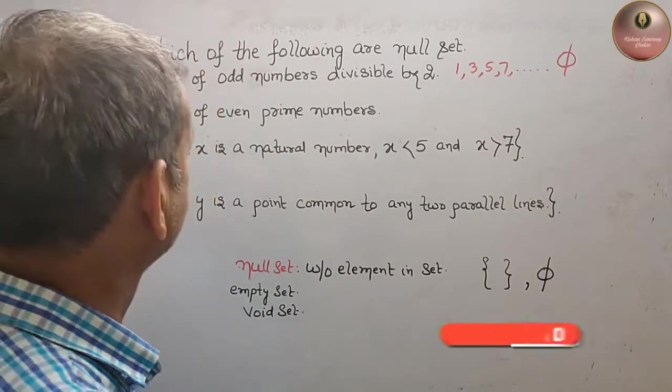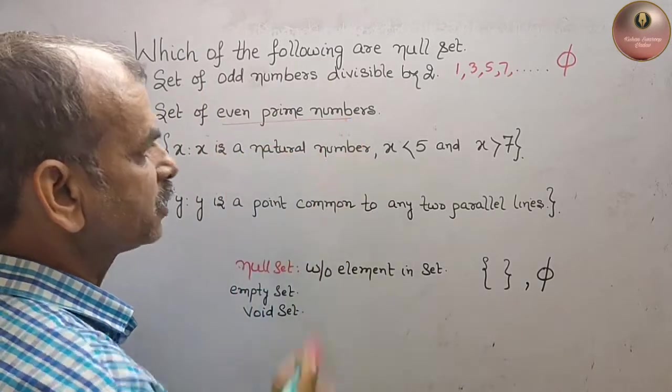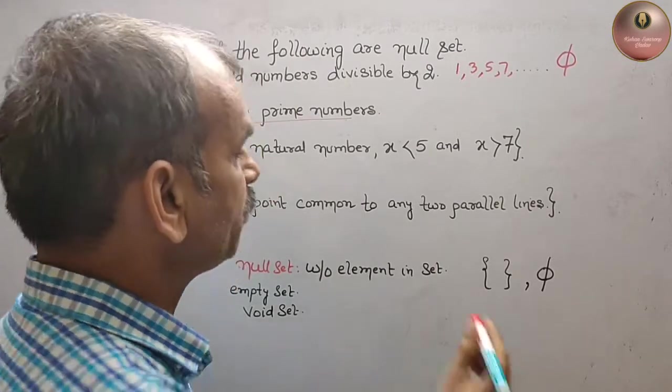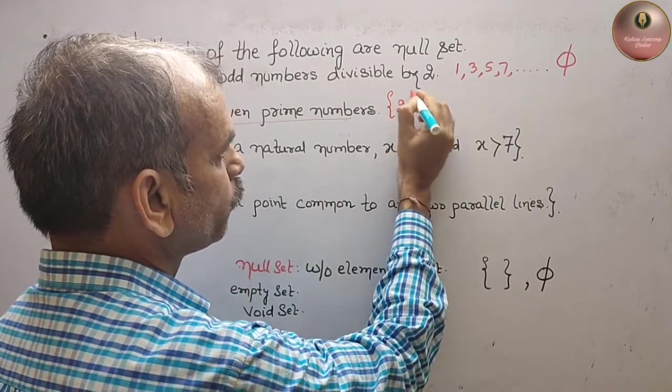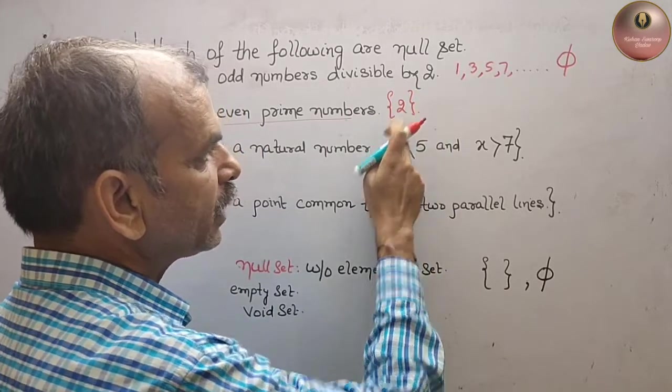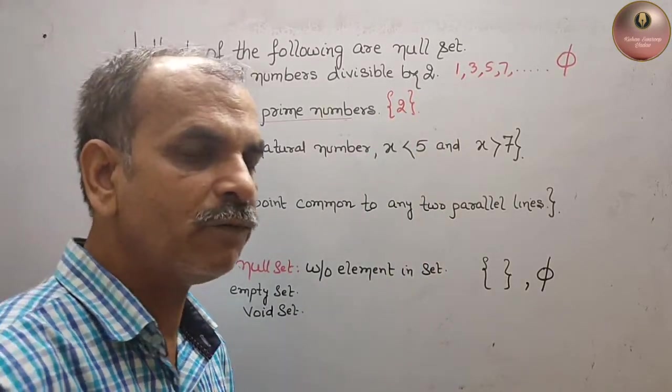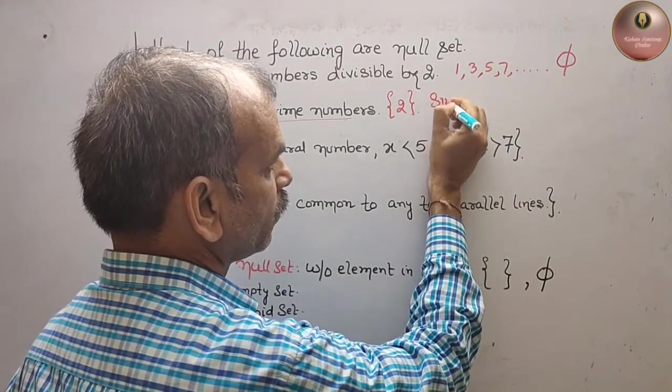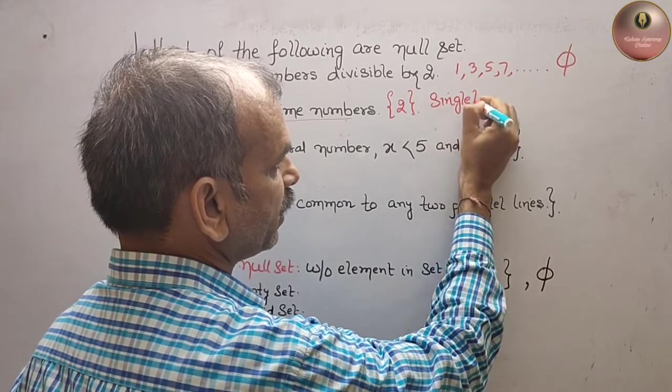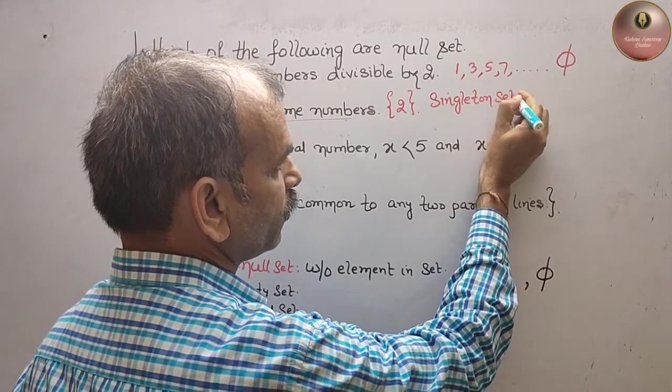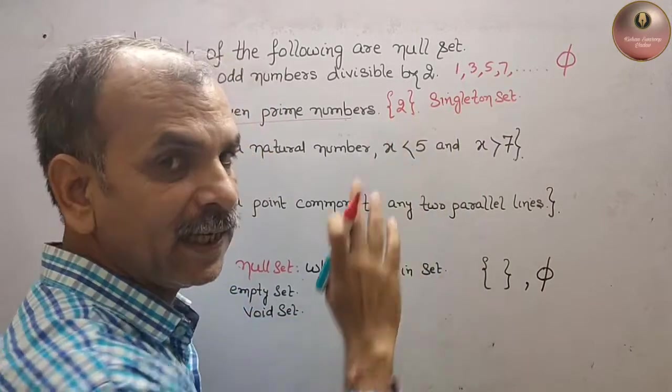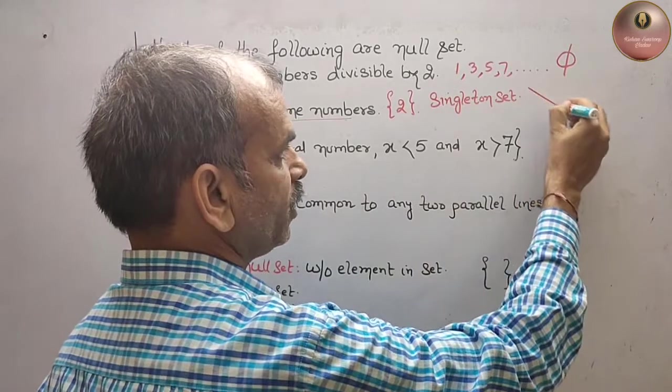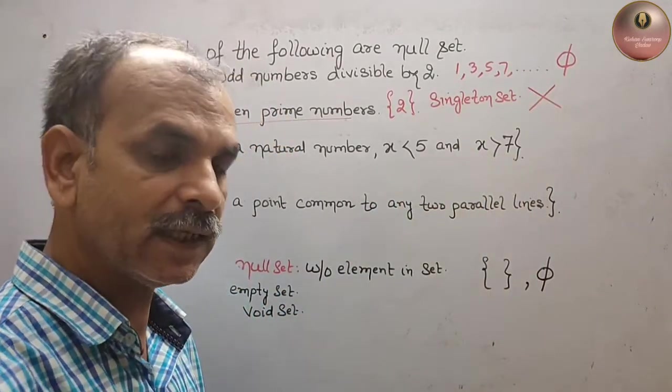Second question: set of even prime numbers. We know that 2 is an even prime number, so simply we will write like this: {2}. Here element is one, therefore we will say it's a singleton set. So it contains a single element, therefore it's not a null set.